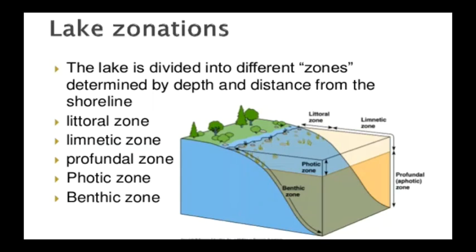In the lake ecosystem, we will have to look at different parts of the lake, and this is what we call lake zonations, where the lake is divided into different zones based on depth as well as distance from the shoreline. You will be able to see how the organisms are distributed in these zones.